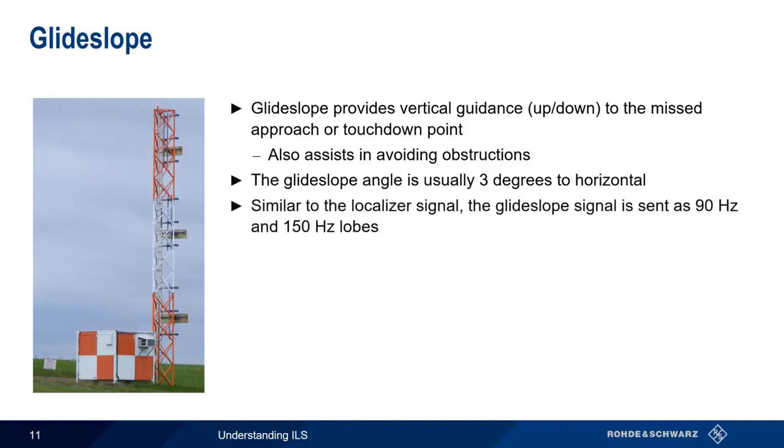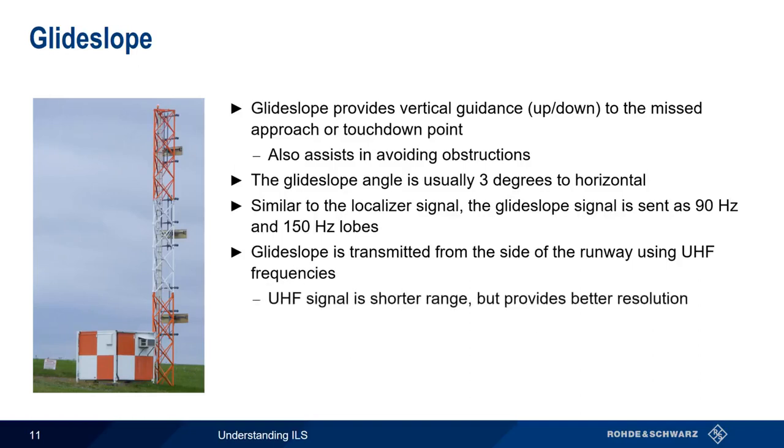Similar to what we just saw with the localizer signal, the glide slope signal consists of a 90 Hz and 150 Hz lobe. But unlike the localizer, the glide slope signal is transmitted from an antenna located on the side of the runway, using UHF frequencies instead of the VHF frequencies used for the localizer. Using UHF provides better signal resolution, but shorter range, compared to the VHF frequencies used by the localizer.